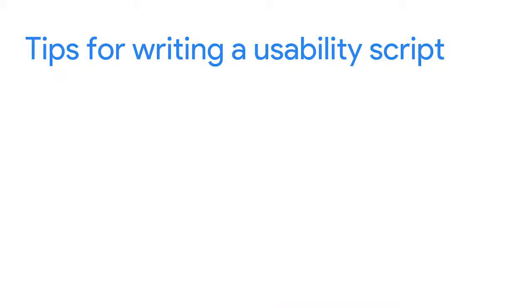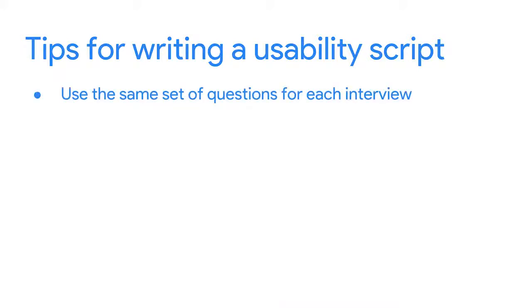Have you ever gone to the doctor intending to ask a bunch of questions, only to realize when you get home that you forgot the most important one? That's frustrating in our personal lives, but it can create errors in a usability study. Prepare ahead of time to avoid having to redo the study. Here are some tips for writing interview questions. First and foremost, use the same set of questions for each interview. Usability studies focus on one person at a time, and you want your conversations with each person to be about the same product features. For your user interviews to be consistent, use the same base set of questions every time — don't improvise or ask random questions to different participants.